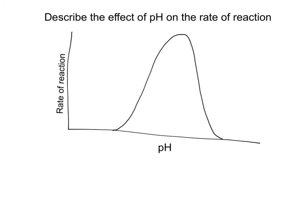This graph shows the effect of pH on the rate of an enzyme-controlled reaction. Again, if the question asks you to describe, you are describing the shape of the graph. The graph shows the rate increasing, then decreasing. Refer to the optimum rate of reaction and state the pH. Remember to refer to the x-axis.